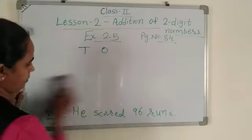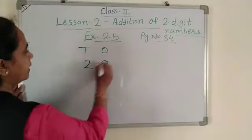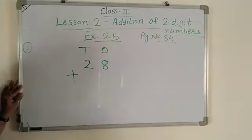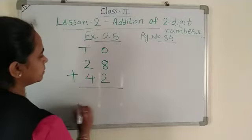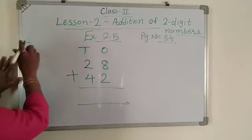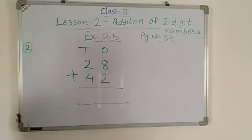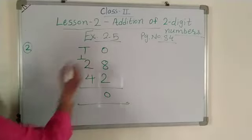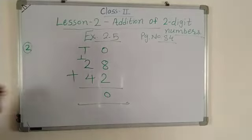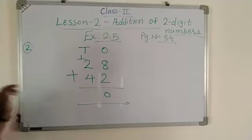Shreya collected 28 balloons, so write 28 plus 42 balloons. Now add 8 plus 2 equals 10. Write 0 and 1 up. Now 1 plus 2 equals 3, 3 plus 4 equals 7.